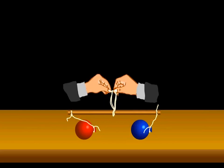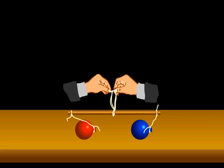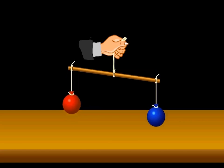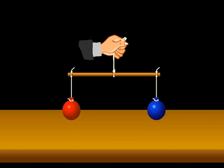Tie another string to the middle of the stick and hold the string in your hand. Adjust the position of the balloons until the stick is balanced.